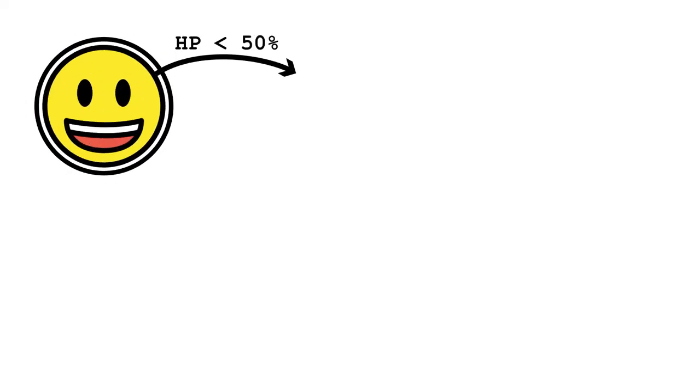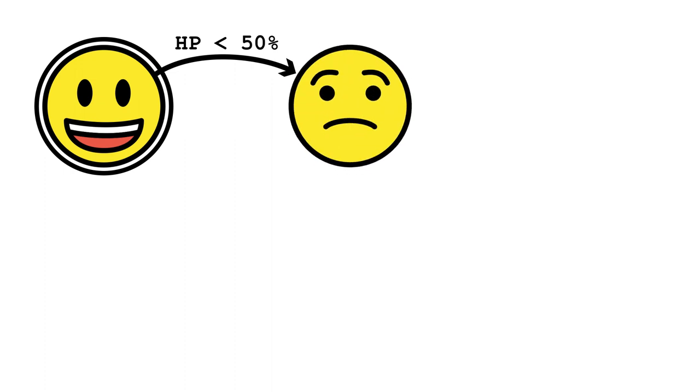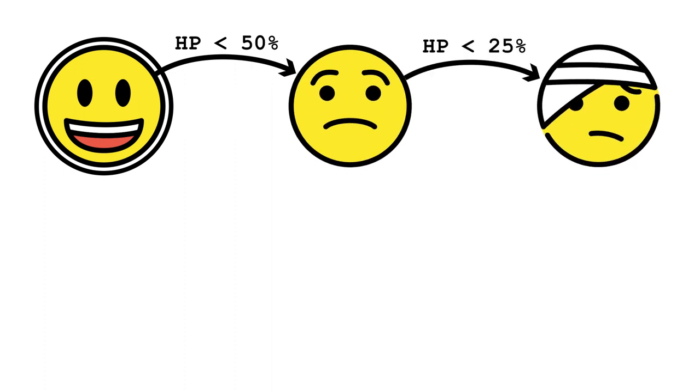Links can be labeled to show under what conditions that state change can happen. For an example, let's build a state machine that models a player's health in an RPG. They start at full health. If they drop below 50% of their hit points, they move into the injured state. If they then drop below 25%, they are wounded, and below 0% they are dead.